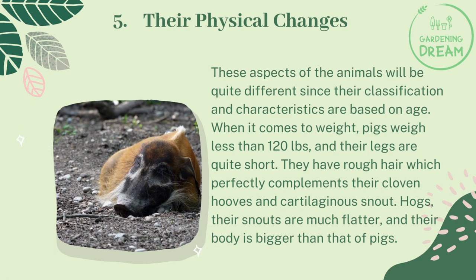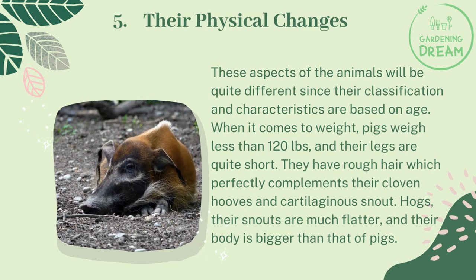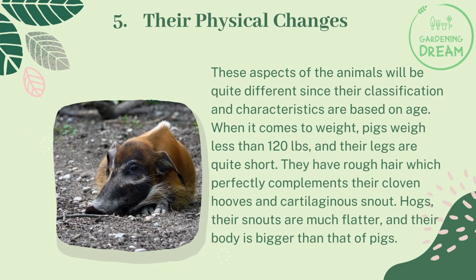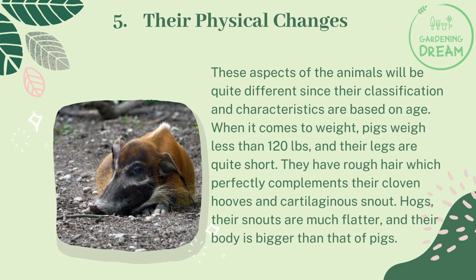The physical characteristics of pigs and hogs differ based on age and classification. Pigs weigh less than 120 pounds, have quite short legs, rough hair, cloven hooves, and cartilaginous snouts. Hogs have much flatter snouts and a larger body than pigs.